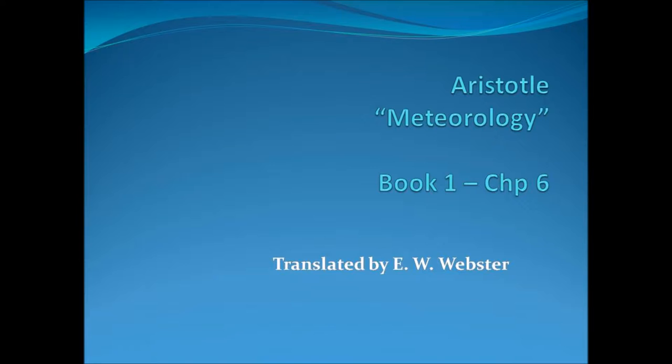A view like theirs was also expressed by Hippocrates of Chios and his pupil Aeschylus. Only they say that the tail does not belong to the comet itself, but is occasionally assumed by it on its course in certain situations, when our sight is reflected to the sun from the moisture attracted by the comet.